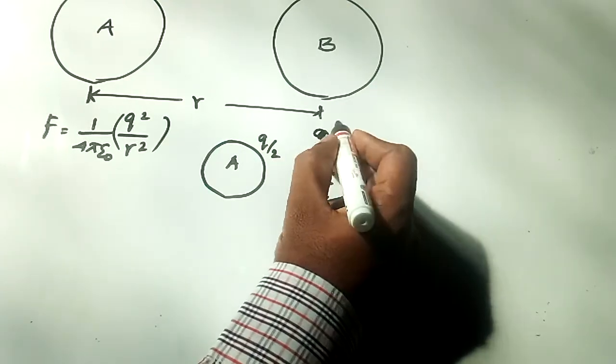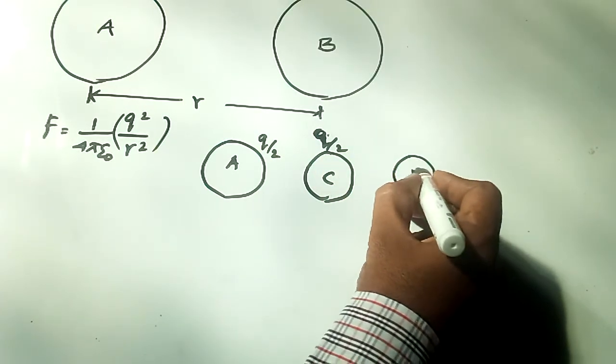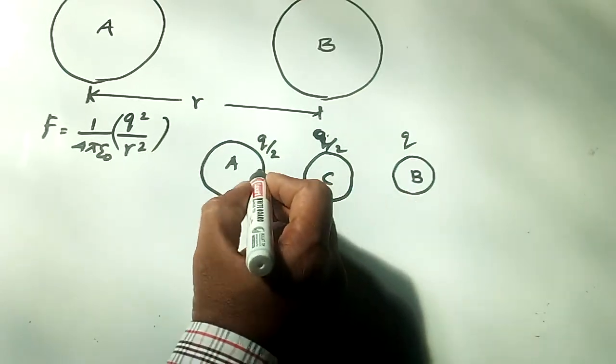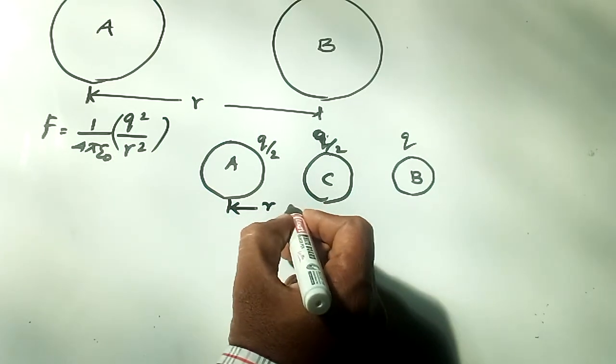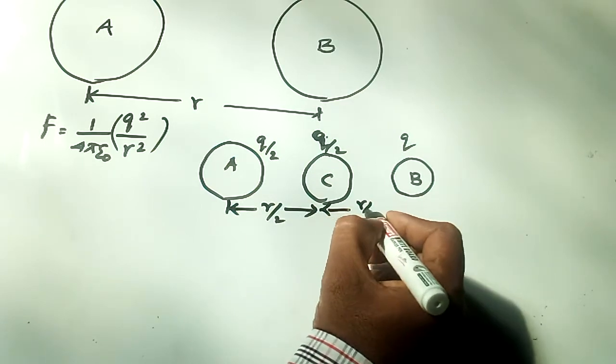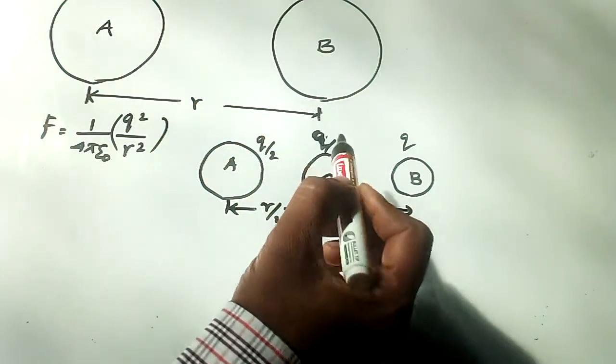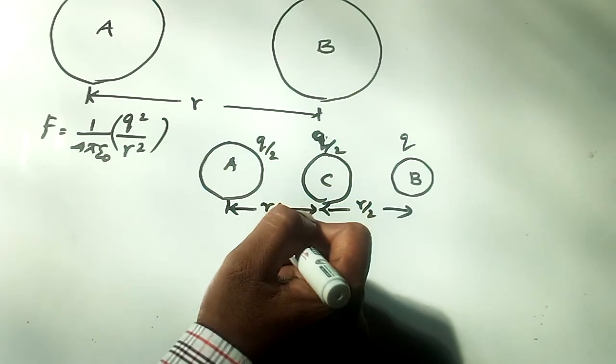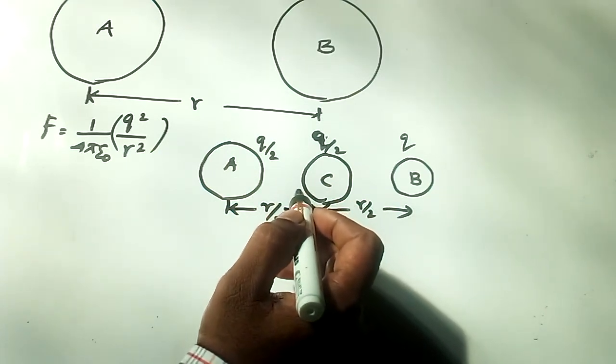If sphere C is placed exactly in the middle between A and B, then the distance between A and C is R/2, and the distance between C and B is R/2. Since the total distance between A and B is R and C is placed in the middle, both AC and CB are R/2.